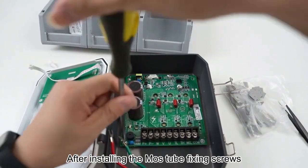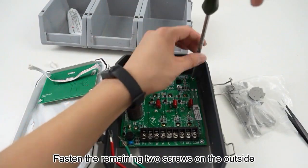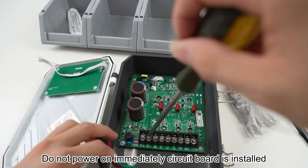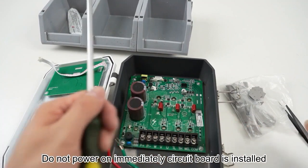After installing the MOS tube fixing screws, fasten the remaining two screws on the outside. Do not power on immediately. Circuit board is installed.